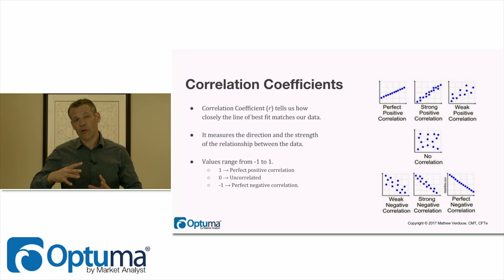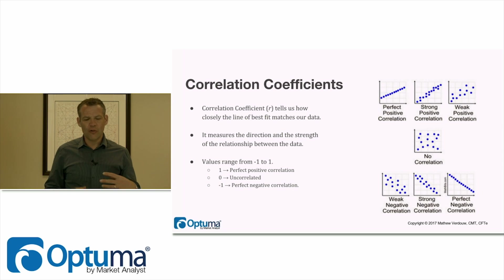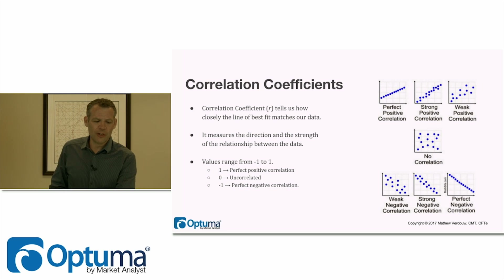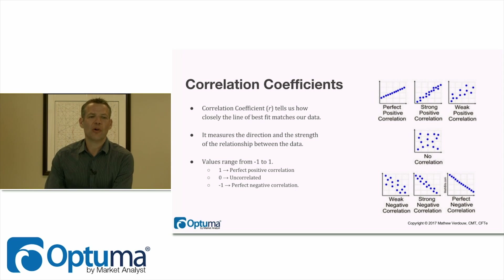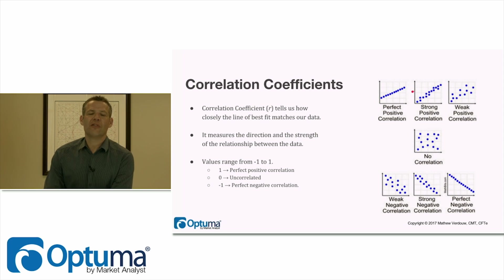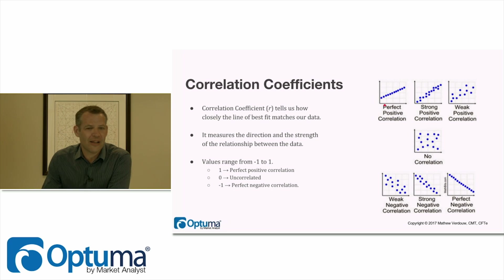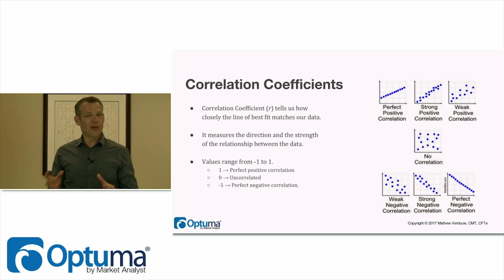The next part of this chapter looks at correlation coefficients, which are a big part of relative strength analysis. When you've got two securities and want to know if they're correlated, we do what we call a regression analysis, which produces a scatter chart. Let's say I've got Microsoft and the S&P 500. For every week I look at the percentage gain in Microsoft and the S&P — when Microsoft went up 1%, what did the S&P do? — and then I plot those points.